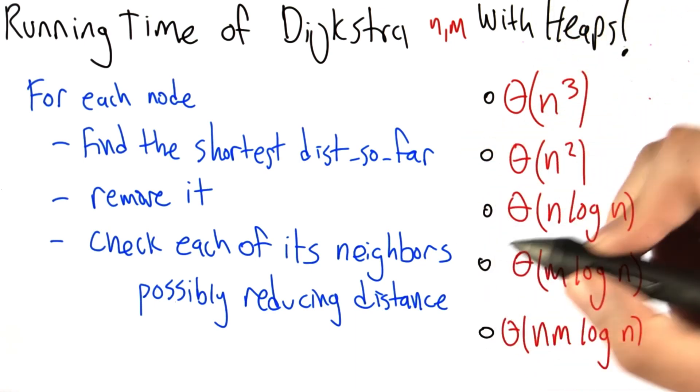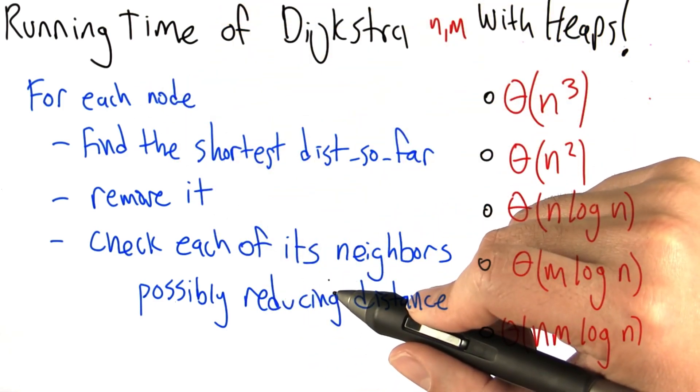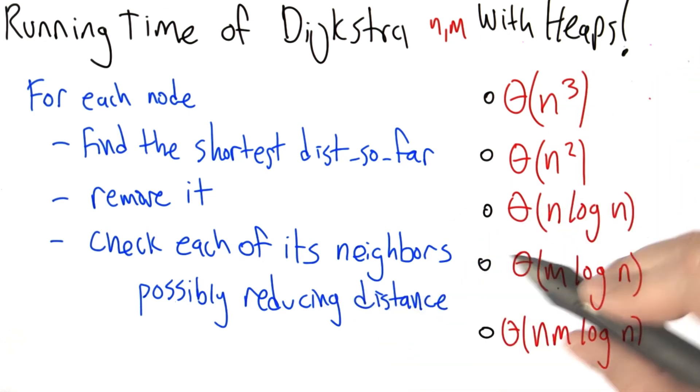So, what does that give us for running time for this entire algorithm? I want you to think it through, and when you think you understand what the running time is, find it in this list and check it off.